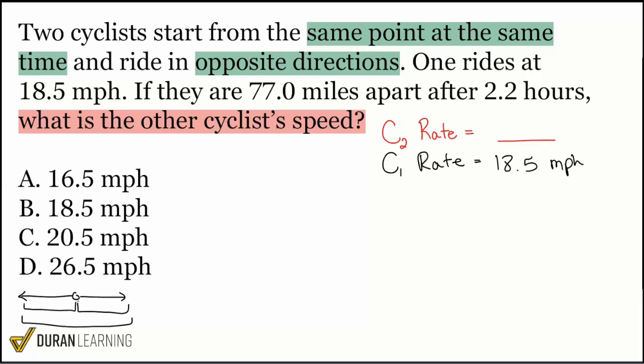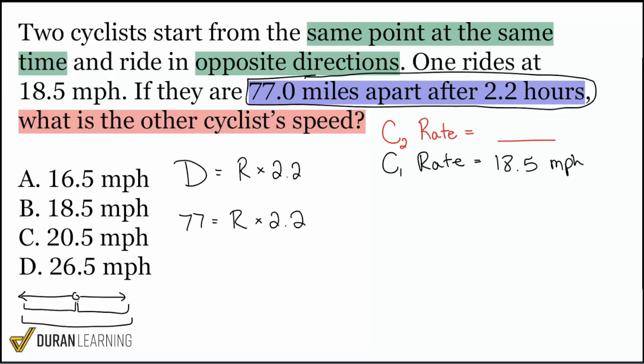We see that they are 77 miles apart after 2.2 hours. I'm going to highlight that in blue: 77 miles apart after 2.2 hours. Guess what I can find out right now? I can find that combined rate. The combined distance is 77 miles. The combined rate is what we would be calculating because we're multiplying by the time that they're traveling combined or together, and that's going to be 2.2 hours. What's the one operation I need to do right here to get that combined rate? Just got to divide. If I divide right here, I can get that combined rate. And once I get that combined rate, it is easy from here.